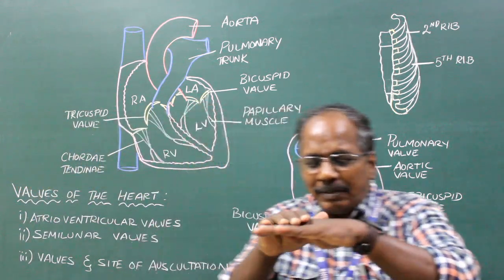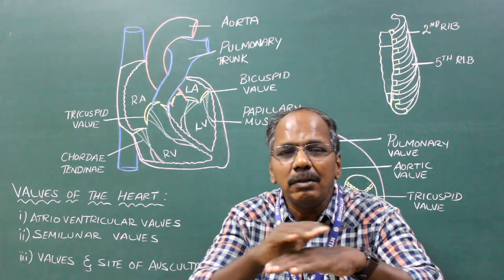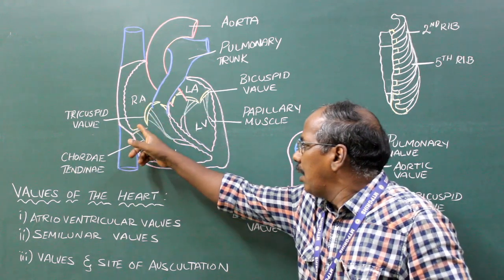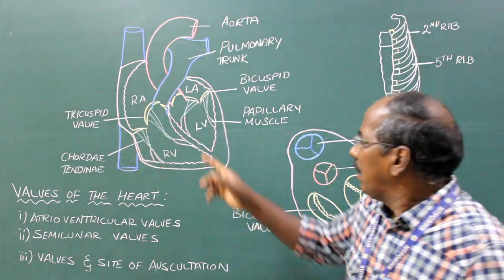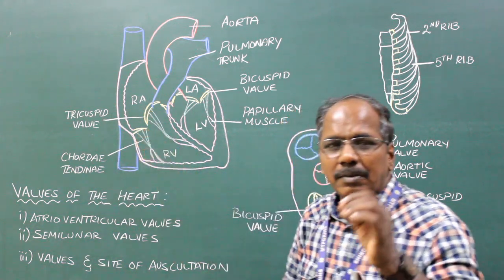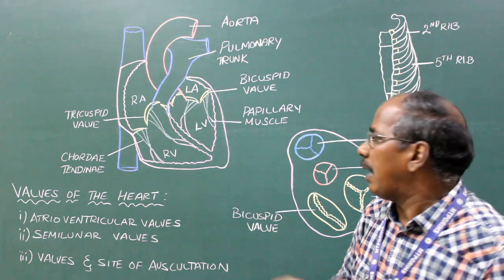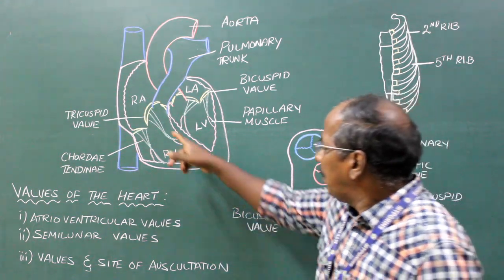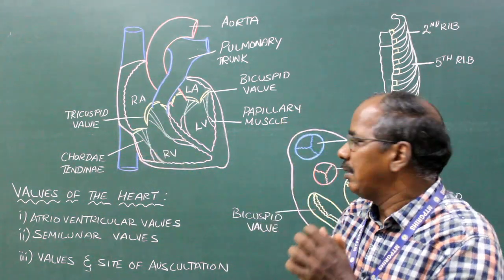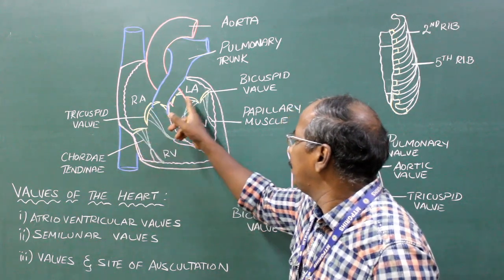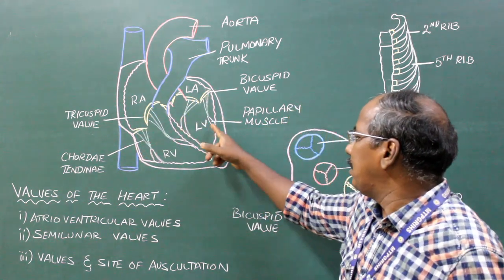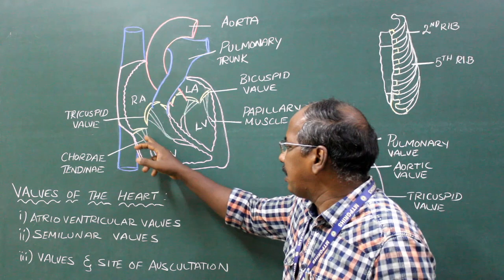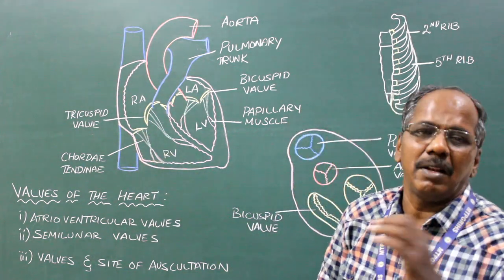The atrial surfaces of the cusps are smooth. The ventricular surfaces of the cusps are rough and provide attachments for the chordae tendineae. The chordae tendineae connect the cusps to the papillary muscles present in the ventricle.